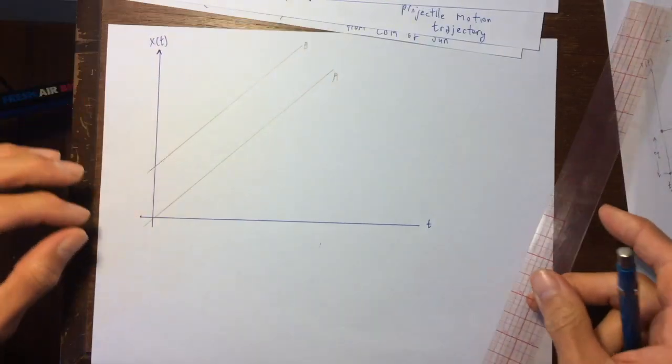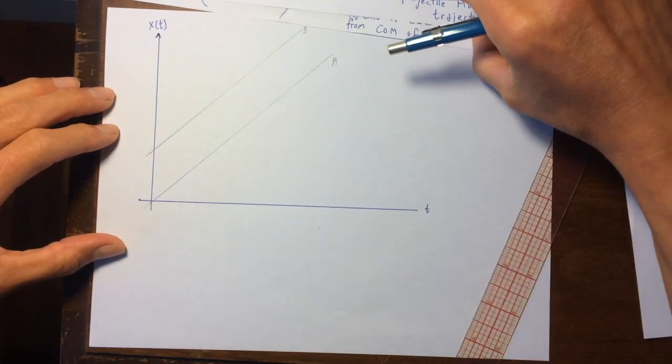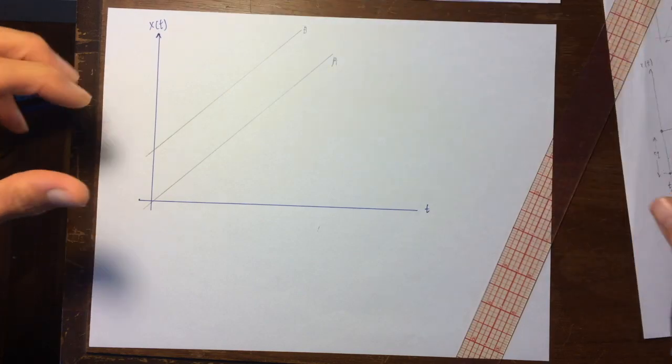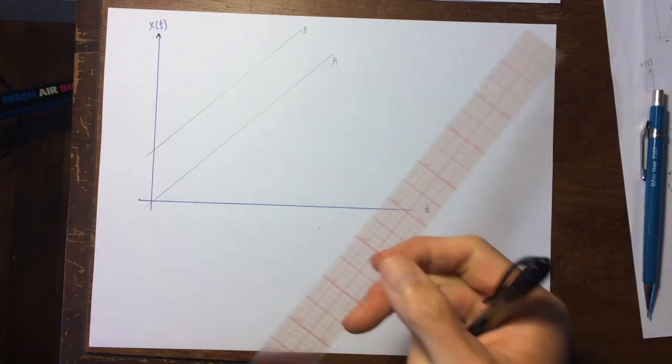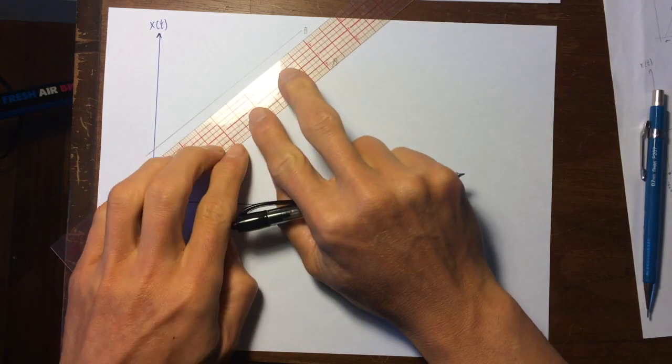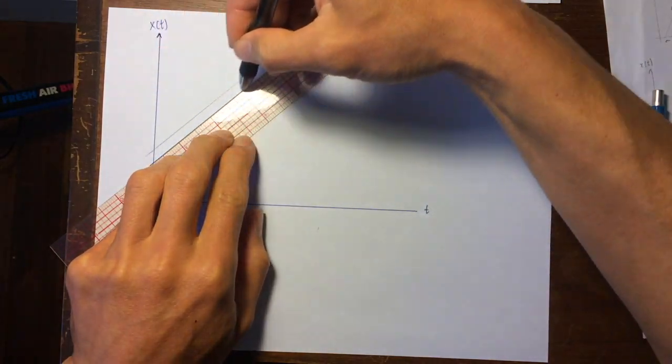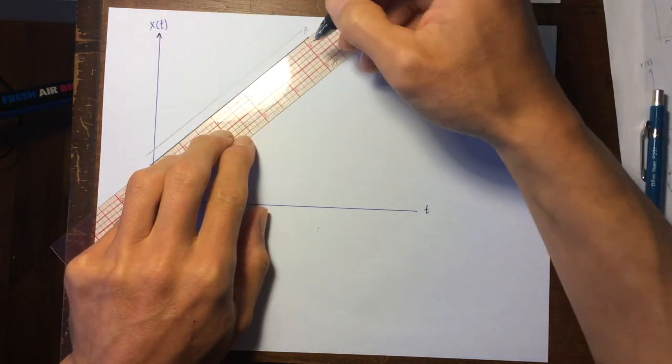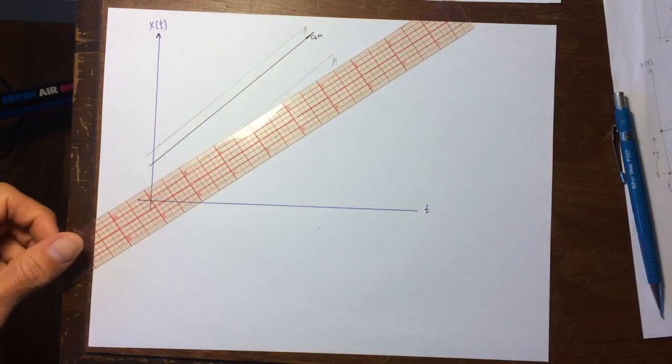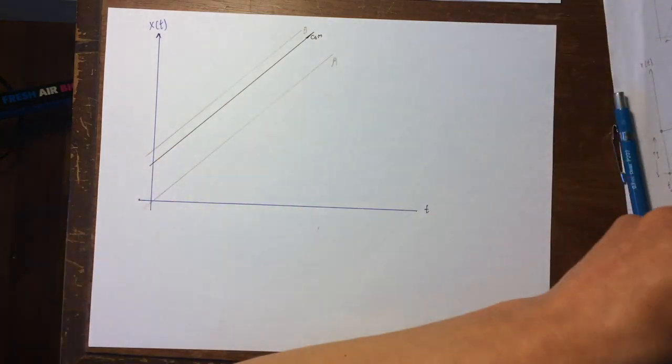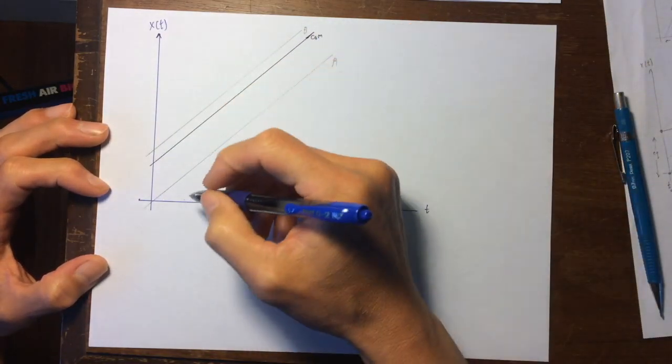If I go over here and look at this trajectory of B and A, if there was no compression or extension in the spring, then that center of mass would just stay along here. And what we're going to see is that this is the center of mass, but what's going to happen is...